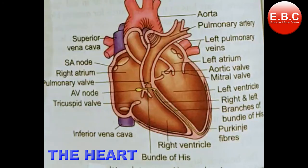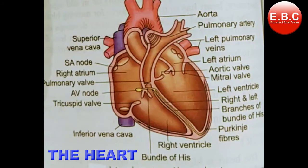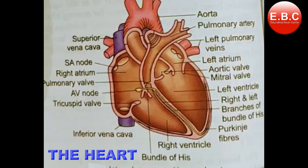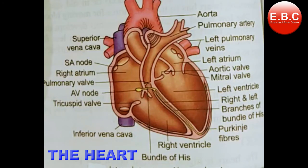There are four valves. The tricuspid valve guards the opening between the right auricle and the right ventricle. Similarly, the bicuspid valve guards the opening between the left auricle and the left ventricle. The aortic semilunar valves are located at the point of origin of the aorta from the left ventricle, and they are three in number. The pulmonary semilunar valves are located at the opening of the right ventricle into the pulmonary artery, and they are also three in number.